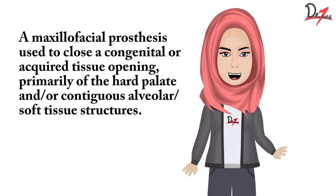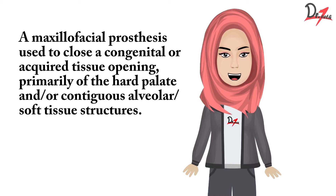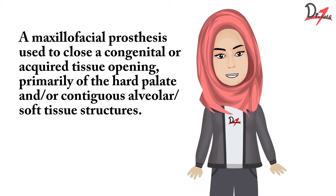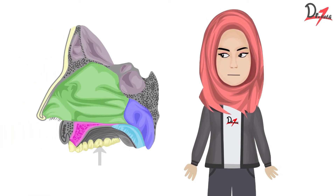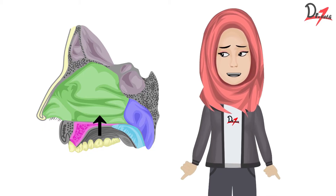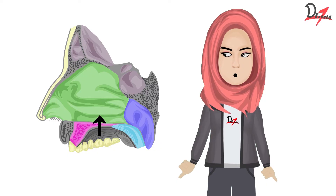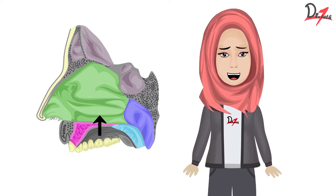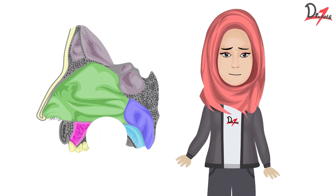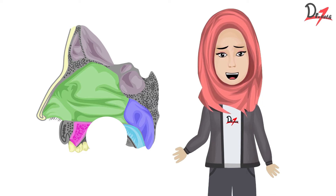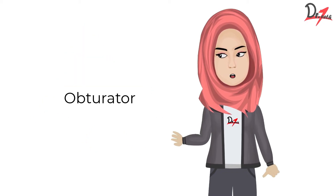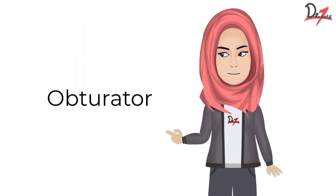Sometimes the patient has carcinoma or a tumor. When you remove that tumor, the entire maxilla or half of the maxilla could be removed. An opening will be created from the mouth to the upper structures. Such patients — how will they speak, how will they eat? It is psychologically so disheartening. So the obturator is a solution to all these problems.